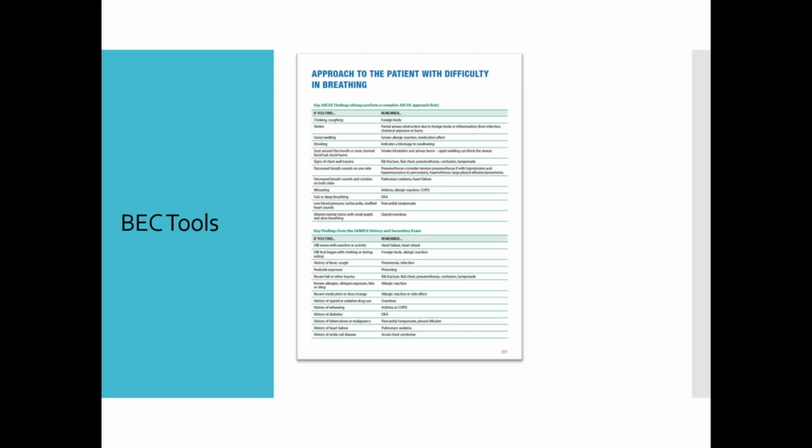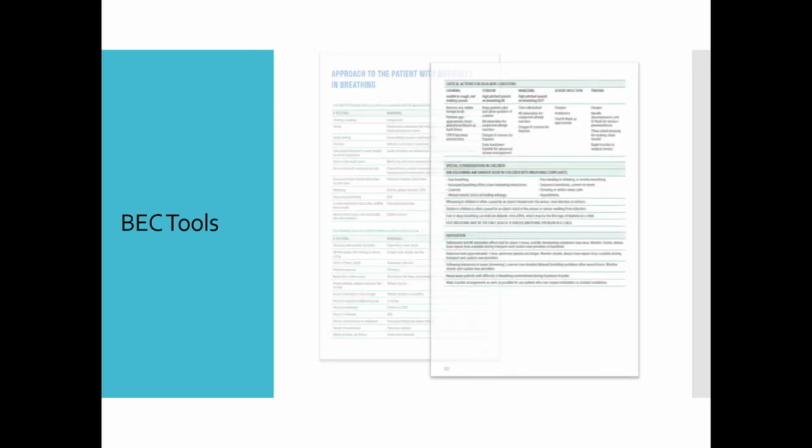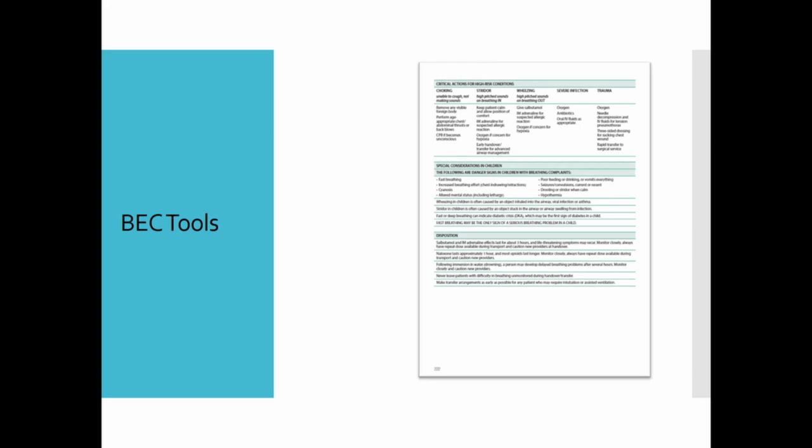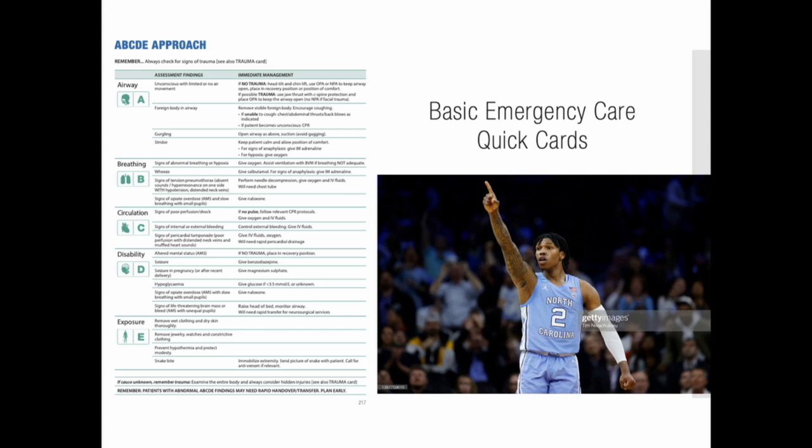Then there are these sections on pitfalls, can't miss sections. These are good for you as facilitators to read through and point out when you're in those sections. I'm going to get really close here - like choking: if you find choking and coughing, you need to think of foreign body. That's something specific to an airway problem they need to address immediately based on that history.